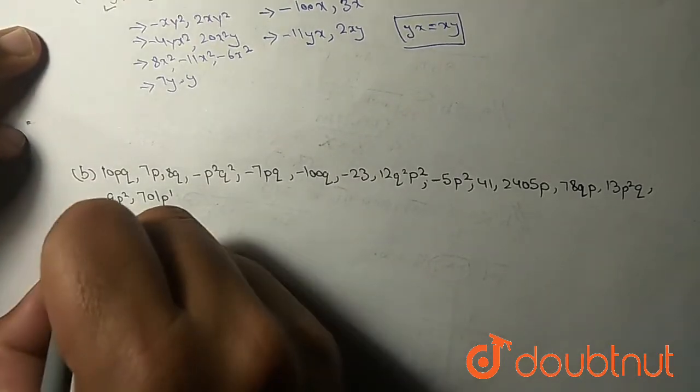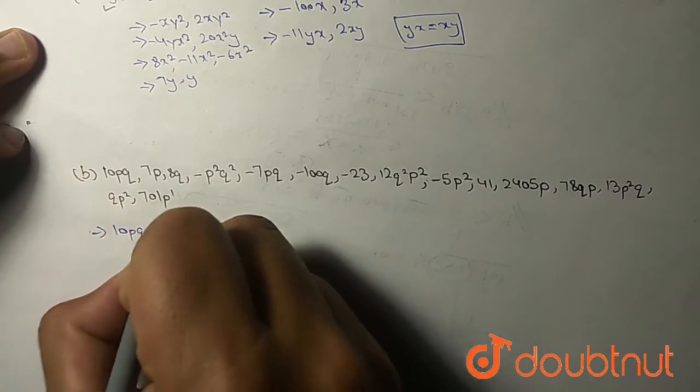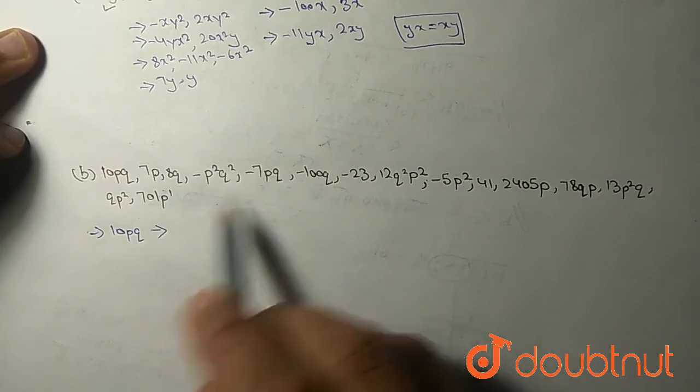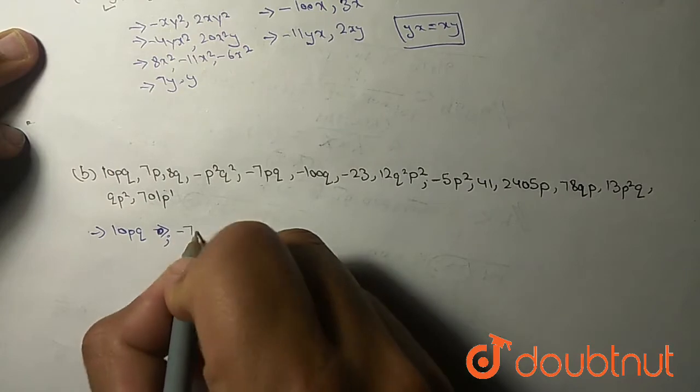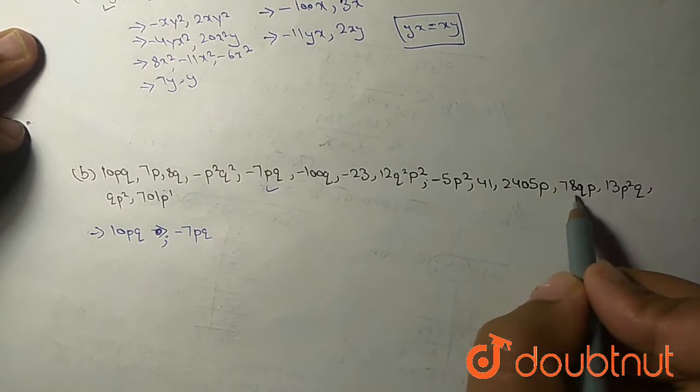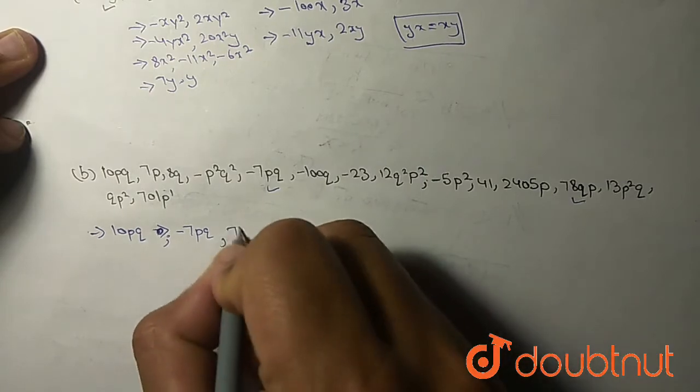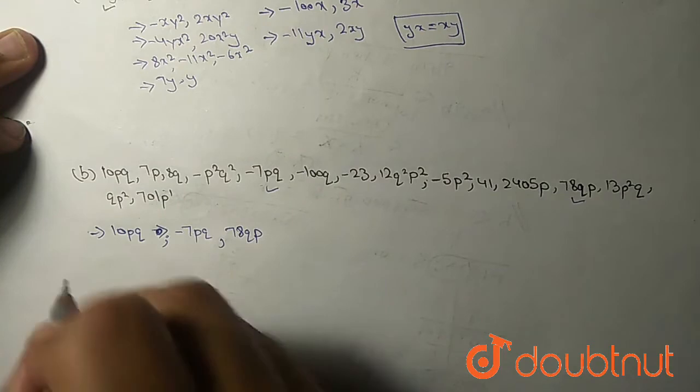Second equation is, first we will see 10pq. Now see, is there another 10pq? Yes, there is minus 7pq and another qp. As I told, qp and pq same, nothing different. So 78qp.